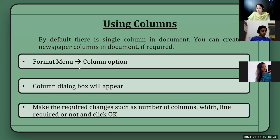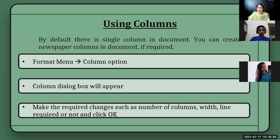Columns can be applied using the Format menu Column option — this option is available in MS Word also, and in Writer in a much better way. A column dialog box will appear where you choose how many columns you want.